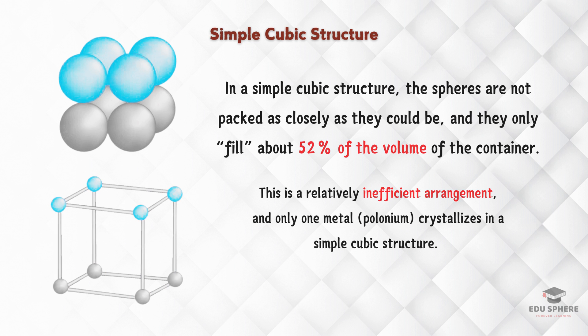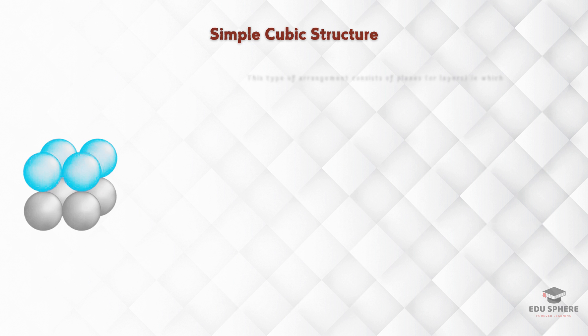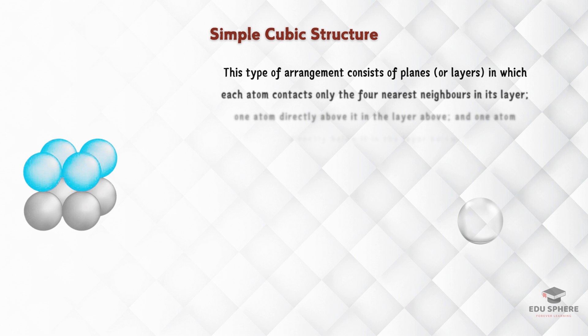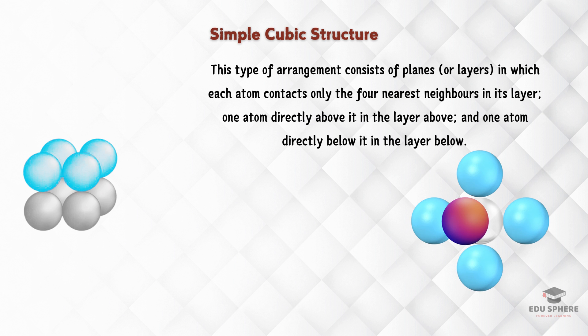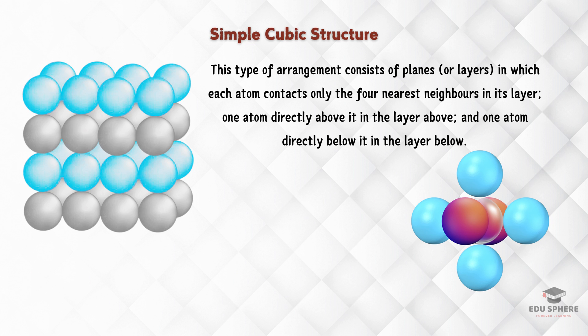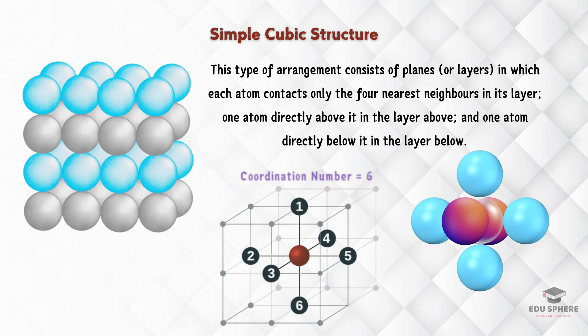Let's take a closer look at how the atoms arrange themselves. Notice how each sphere touches only four neighbors in its own layer, plus one directly above and one directly below. This pattern repeats throughout the entire crystal. This is an important concept: in any crystal structure, the number of other particles a single particle touches is called its coordination number. Because each polonium atom touches six other atoms in this arrangement, the coordination number for a simple cubic structure is six.